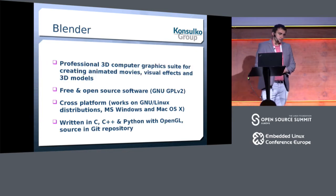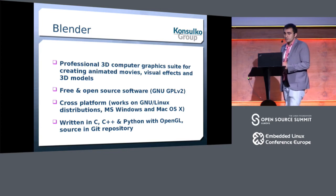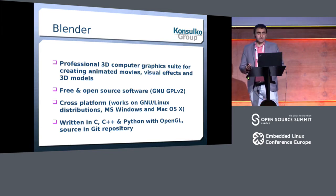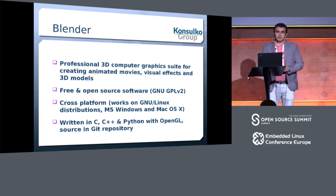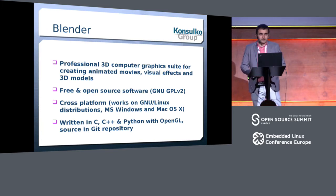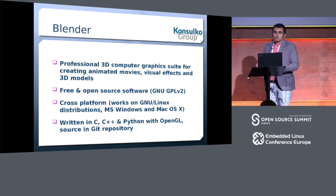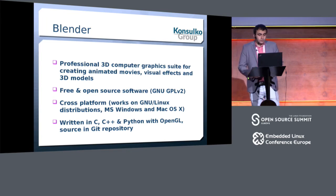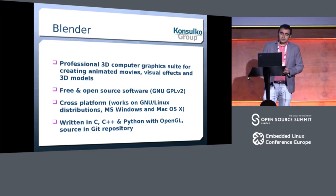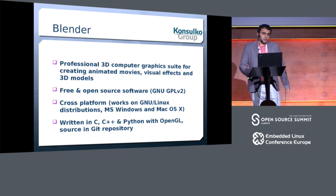Blender is not exactly a regular CAD software — it's actually not a CAD software at all. It's a professional 3D computer graphics suite widely used for making animation movies. You can also make 3D models, export them to STL files, and 3D print them. It's free and open source under GPL version 2, cross-platform, written in C, C++, and Python using OpenGL, with source code in Git.